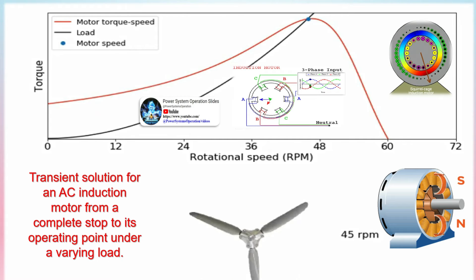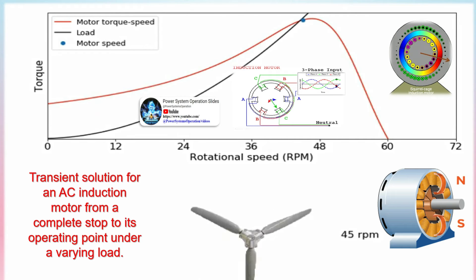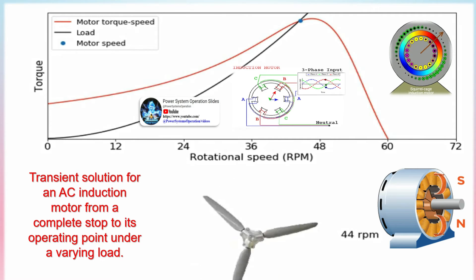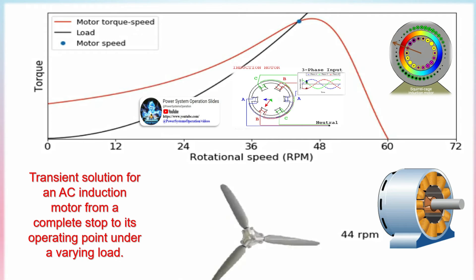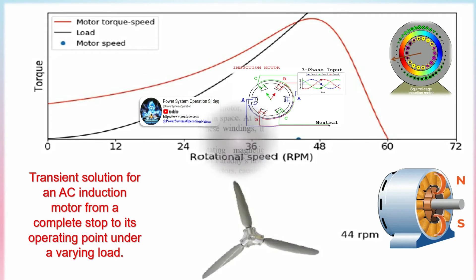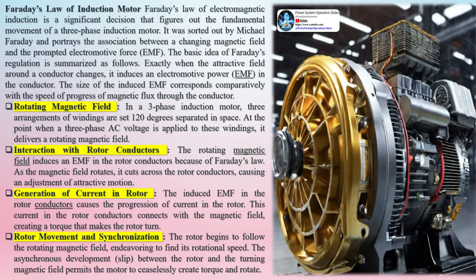Full load motor efficiency is around 85–97%, with losses broken down roughly as follows: friction and windage 5–15%, iron or core losses 15–25%, stator losses 25–40%, rotor losses 15–25%, and stray load losses 10–20%. Various regulatory authorities in many countries have introduced legislation to encourage the manufacture and use of higher efficiency electric motors, including forthcoming mandatory use of premium efficiency induction type motors in defined equipment.